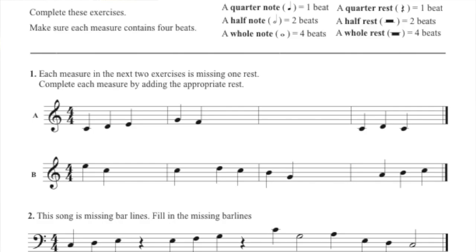For instance, in the first measure we have four beats but we only have three notes. So that should tell you four minus three is one. So we are missing one quarter note rest.